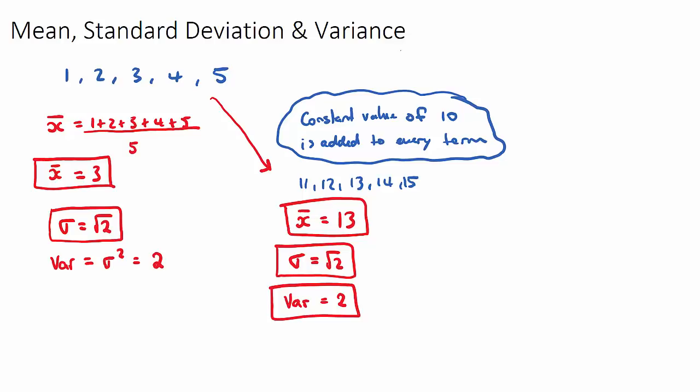But the more tricky question is, if a constant multiple to every term. So constant multiple, let's say of 10 to every term, or they might say each value in the original data set was multiplied by 10. Our new data will be 10, 20, 30, 40, and 50.